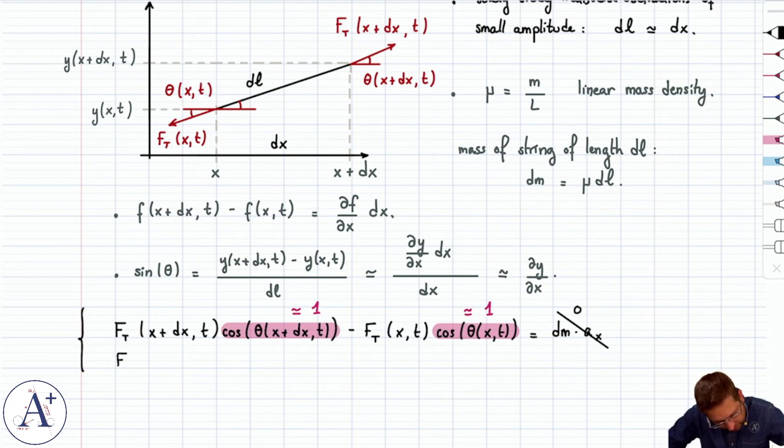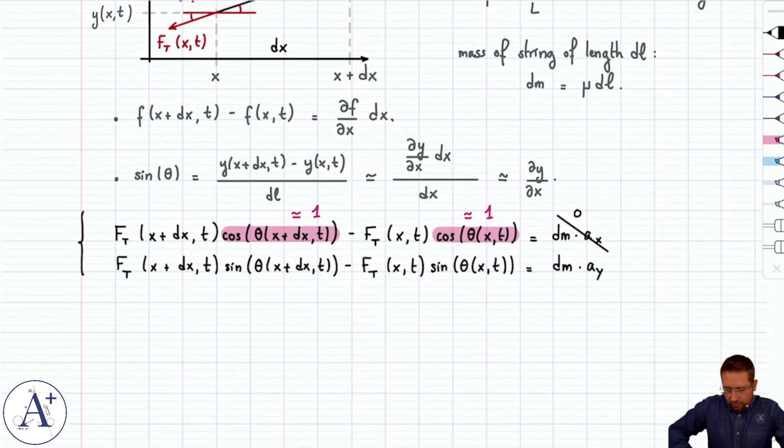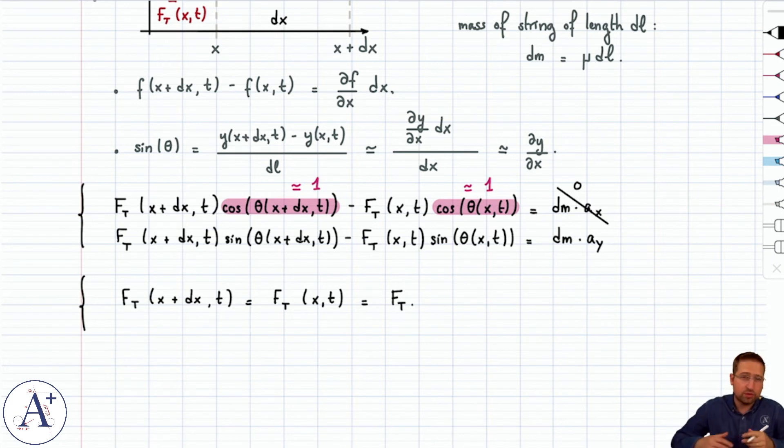The conclusion is that the tension force is actually independent of x, because what you end up having is F_T of x plus dx, t is equal to F_T of x and t. So we're going to have a uniform tension. That will be useful in a second. In the y direction, let's write F_net_y. That's F_T(x+dx,t) sin(θ(x+dx,t)) minus F_T(x,t) sin(θ(x,t)), and that's dm a_y. We know what dm is, it's μ dL. We can summarize the first equation by writing F_T is a uniform tension throughout the string.